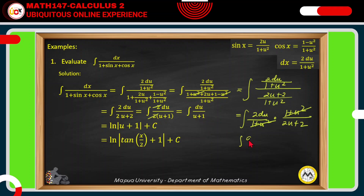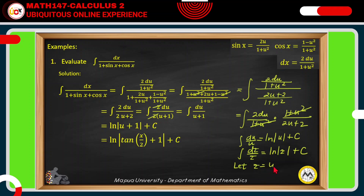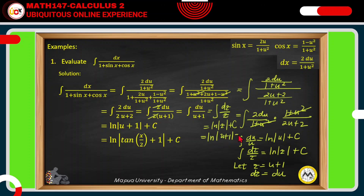We recall the formula: the integral of du over u equals the natural log of the absolute value of u plus the constant C. We let the variable z equal u plus 1, so dz equals du. By substitution, this becomes the integral of dz over z, which equals the natural log of z plus C, where z is u plus 1, giving the natural log of u plus 1 plus C.